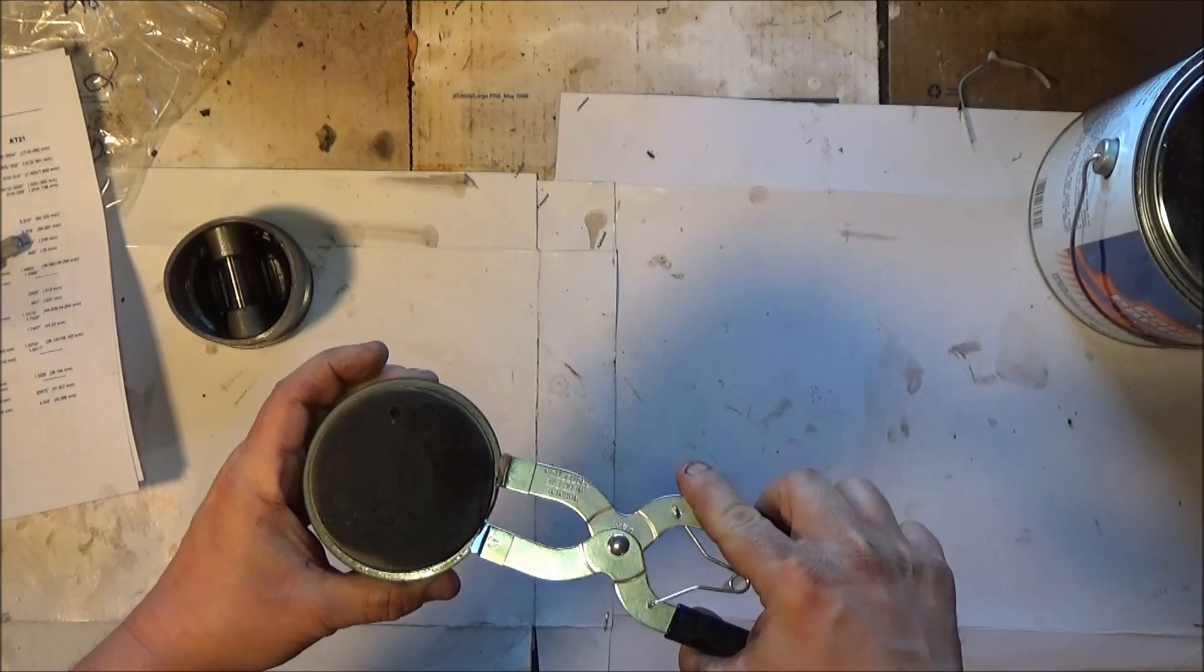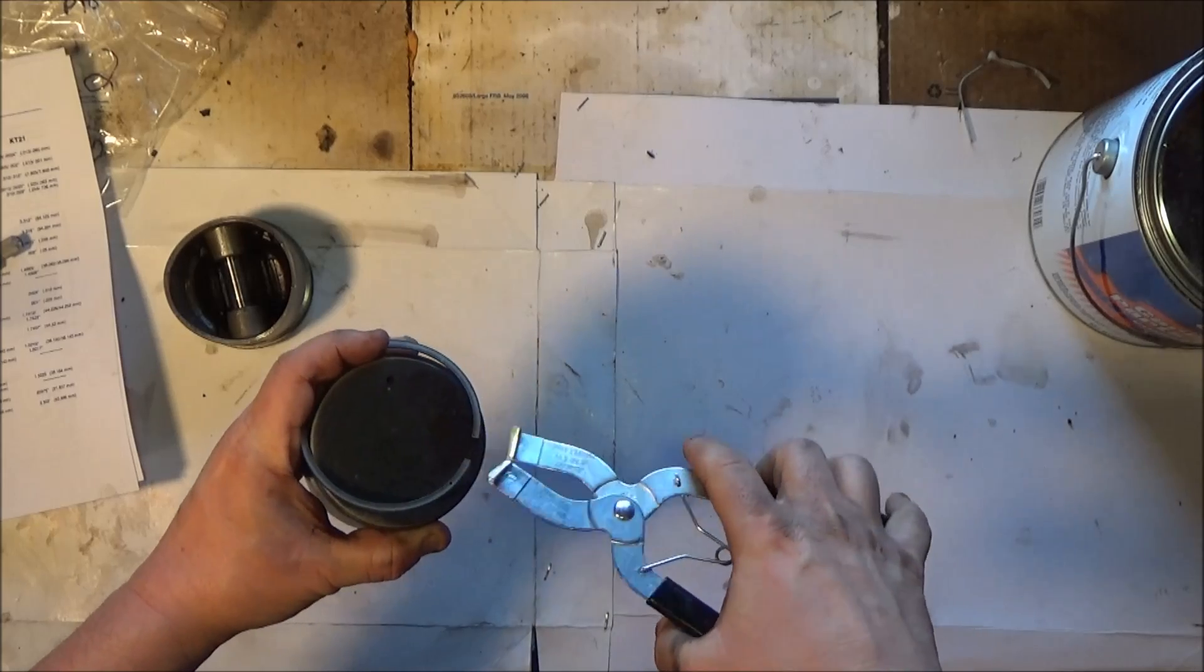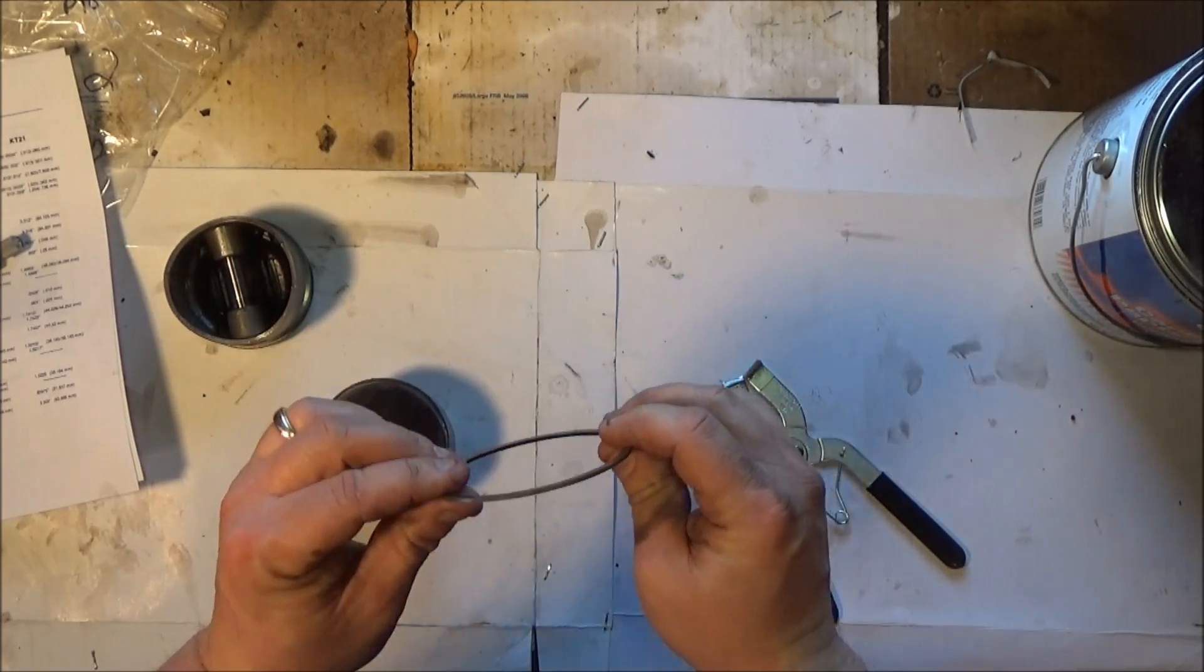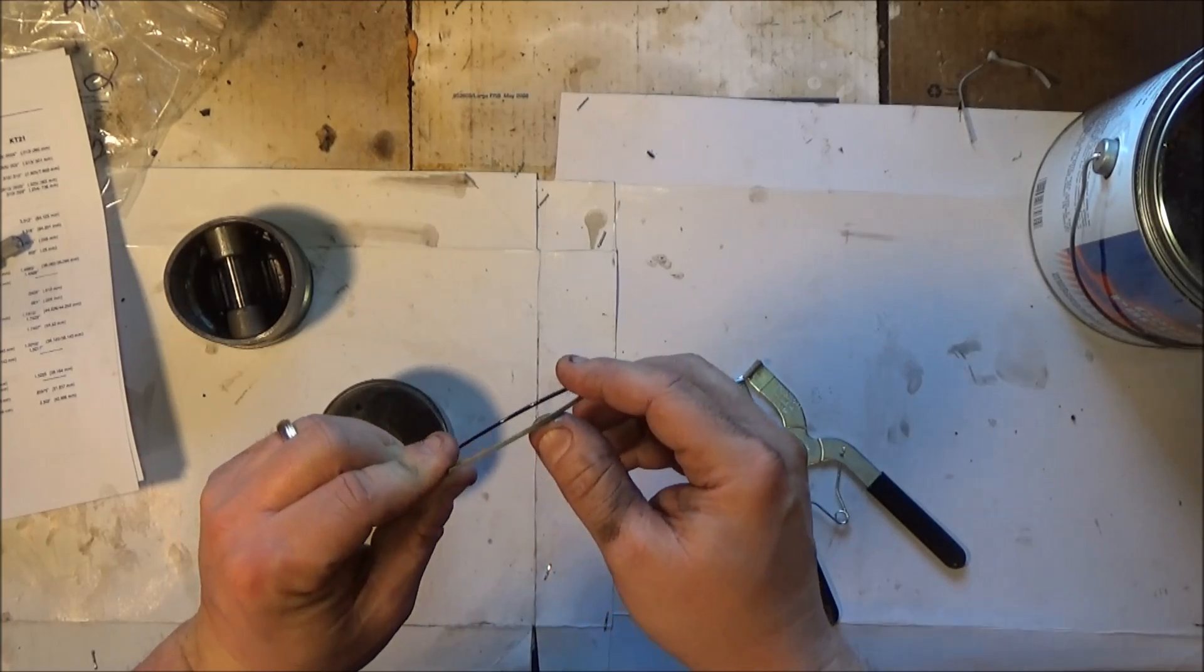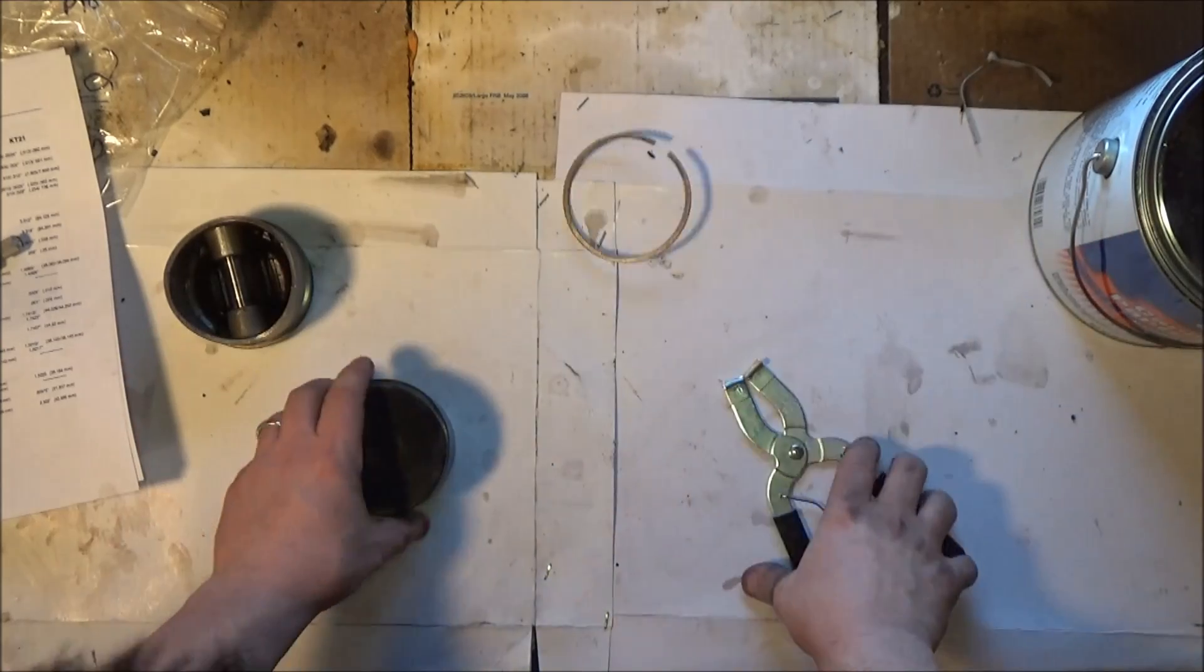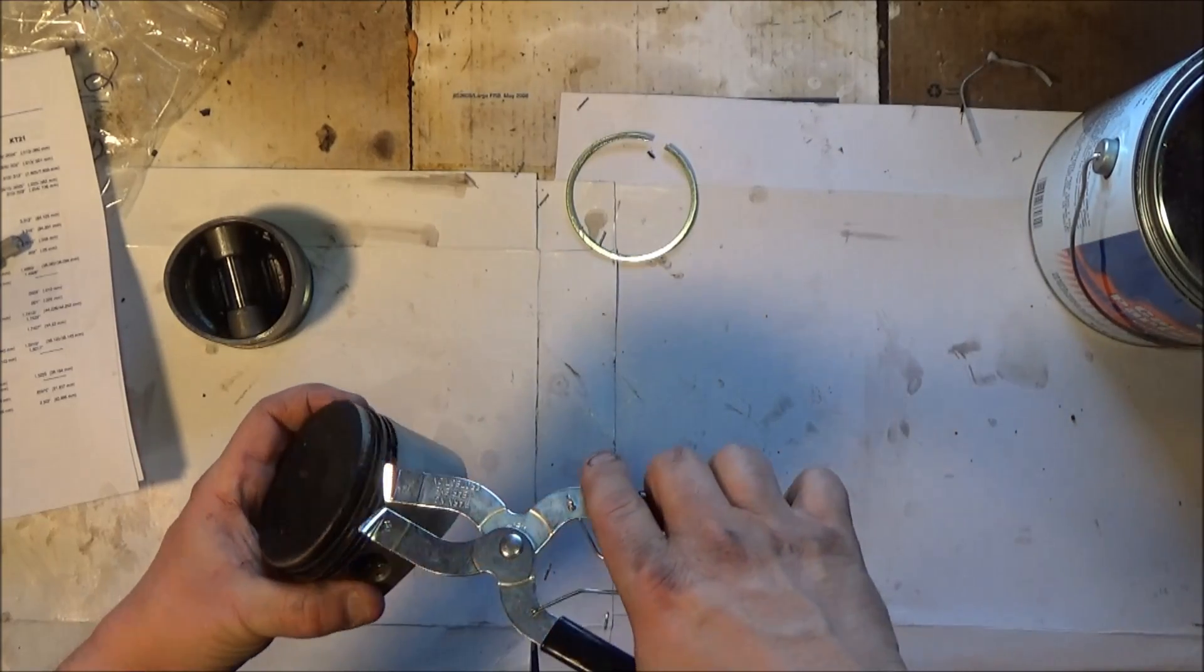Let's get the rings off first. These are just a cheap ring pliers. Kind of grab it in the gap and then they come right off. These are fairly shiny, they're pretty worn.